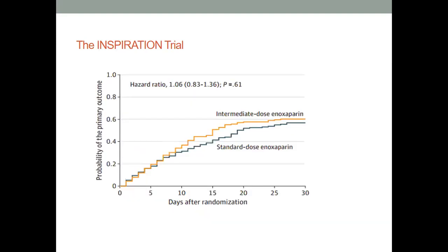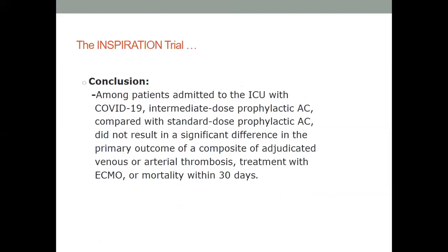As you can see in this graph, the follow-up period is around 30 days. Comparing standard dose enoxaparin to intermediate dose enoxaparin, there is a slight separation in the curves that comes back closer over time, without any subsequent benefit — it is really a twin graph. The conclusion was that among ICU COVID-19 patients, intermediate dose prophylactic anticoagulation compared to standard dose did not result in a significant difference in the composite outcome of venous or arterial thrombosis, ECMO treatment, or mortality within 30 days.